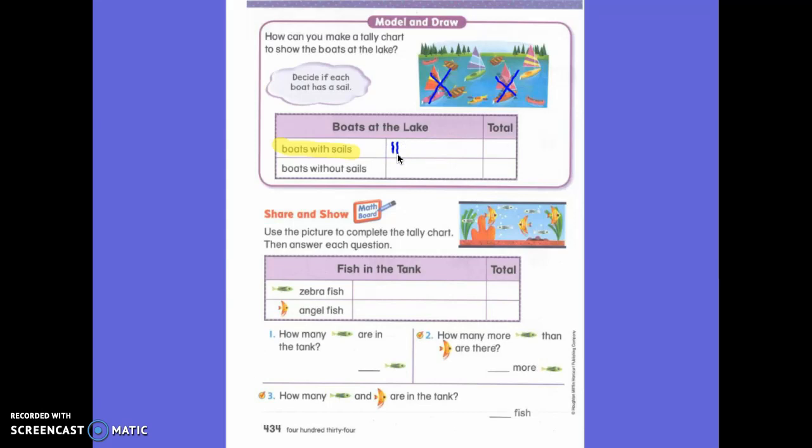Okay. So each time you add another boat, you need to put another tally mark. You need to be careful because if you already have four and you want to add one more, what do I do? Put it across. Okay. And then don't forget to write your total. Then I want you to find the boats without sails and then put them on the tally chart. Don't forget your total as well. And then again, this is how I can make my own tally chart.